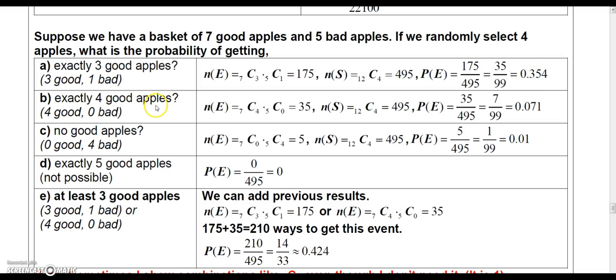What about exactly four good apples? Well, four good apples would be four good apples and no bad apples. So, out of the seven good apples, we choose four. And out of the five bad apples, we choose none. And again, you don't even have to use this because it equals one. And then that's 35. And then we divide 35 by 495, which reduces to 7 over 99, or 0.071.